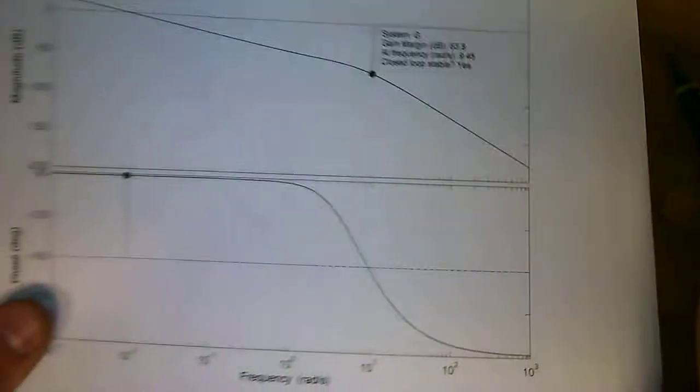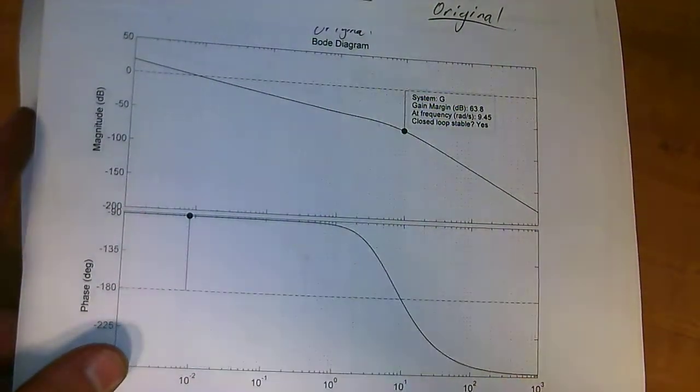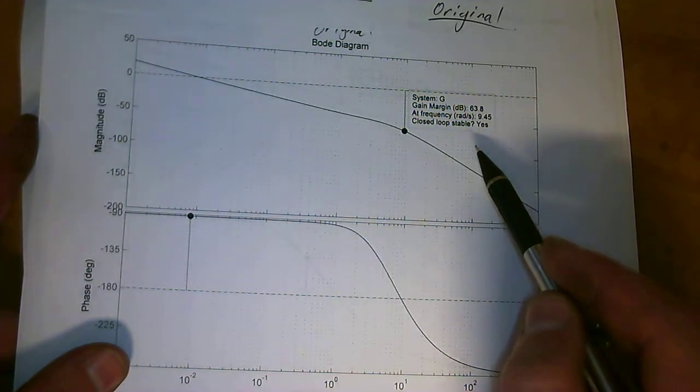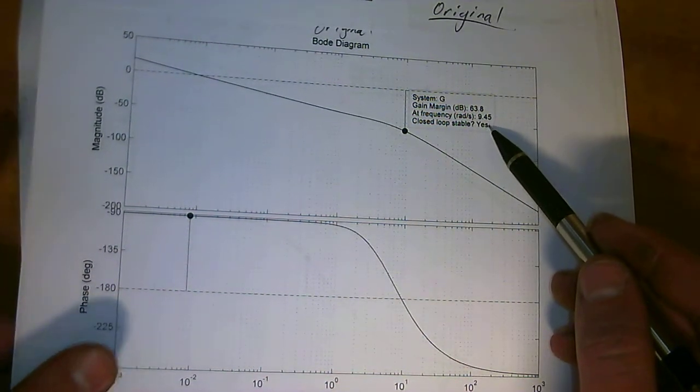You are able to find a gain margin of 63.8 dB and a frequency of 9.45 radians per second.